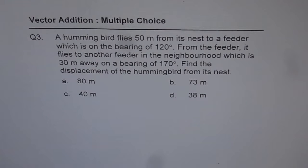Question number 3. A hummingbird flies 50 meters from its nest to a feeder which is on the bearing of 120 degrees. From the feeder, it flies to another feeder in the neighborhood which is 30 meters away on a bearing of 170 degrees. Find the displacement of the hummingbird from its nest.